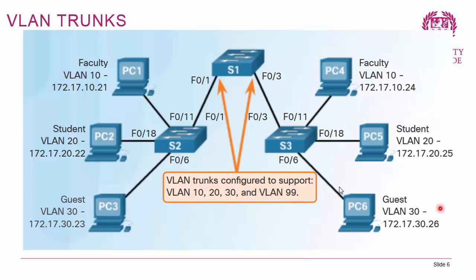When we have different VLANs for hosts, the links between switches must carry traffic for all different VLANs. An access port can only carry traffic for one VLAN, plus a voice VLAN. The links between switches must carry traffic for all VLANs. In our scenario, the links between Switch 1, Switch 2, and Switch 3 must carry traffic for VLAN 10, 20, 30, and management VLAN 99. For that, we use what is called trunks.